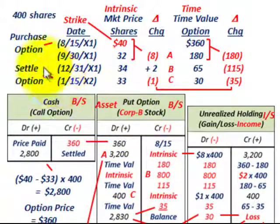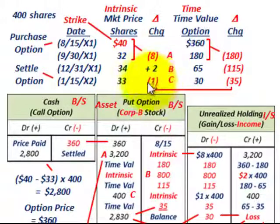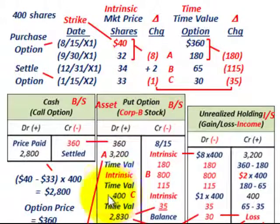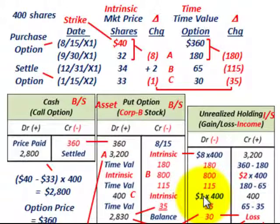Now let's look at when we settle this option on the last date. We were sitting at $34 per share and now it moves down to $33 per share — a decrease of $1 per share. That should increase our put option account, because we have a decrease in our market price versus the strike price. So we would increase our put option account by $400 — that's for the intrinsic portion: $1 reduction in price per share times 400 shares. And that would be an unrealized holding gain of $400.